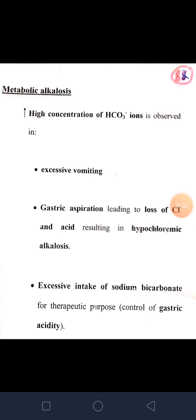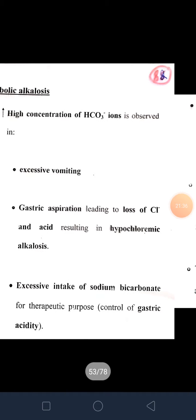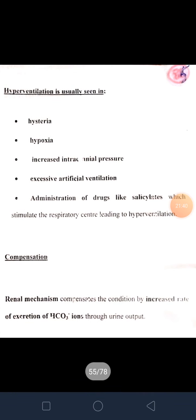In metabolic alkalosis there is increase in bicarbonate ion. As a metabolic disorder, compensation is by both lungs and kidney. Lungs will hypoventilate because bicarbonate ion is increased — acid should increase, and carbon dioxide level increases in the body by hypoventilation. The renal mechanism causes more excretion of bicarbonate ion via urine, because there is already excess bicarbonate in the body and the kidney will excrete more of it.